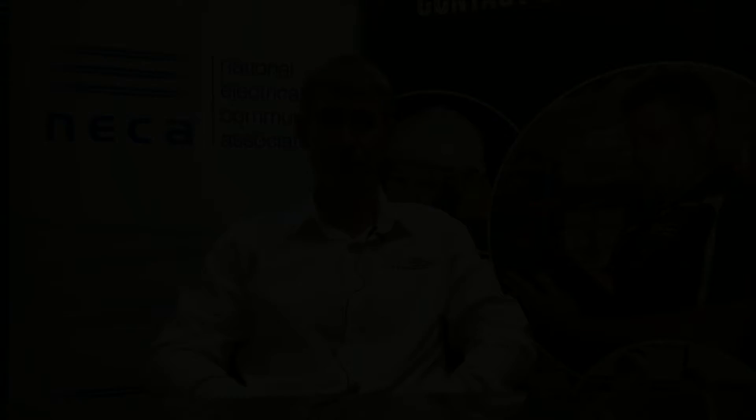Western Power has given NECA Technical important statistics to show the most common types of inspector's orders issued in 2015 in relation to Section 2 of the wiring rules. The pink section of this graph from Western Power shows that the majority of Section 2 defects are due to non-compliant switchboards.